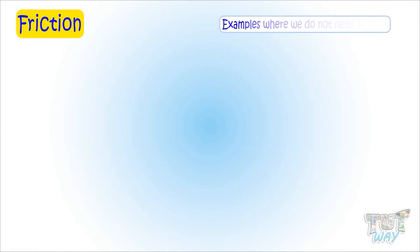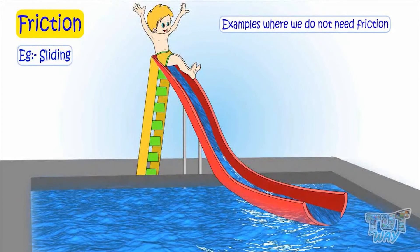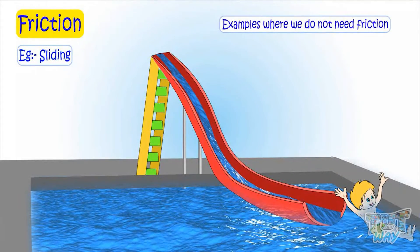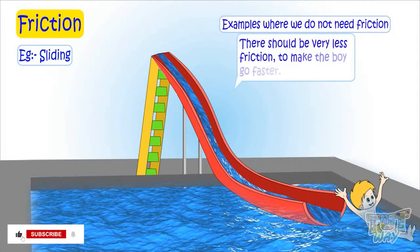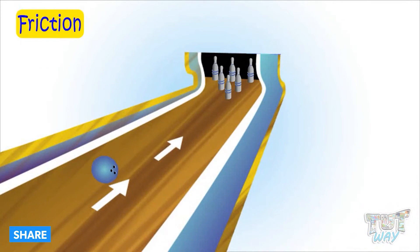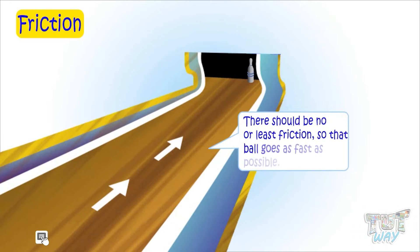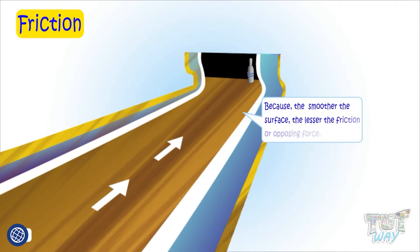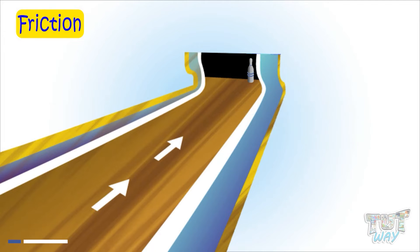Now let's see examples where we do not need friction. Here, the boy wants to go faster to enjoy the ride, so friction should be very less. Here is another example: in this bowling game, there should be no or least friction so that the ball goes as fast as possible. Because the smoother the surface, the lesser the friction or opposing force. When there is no opposing force, the ball is bound to go very fast.